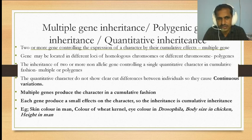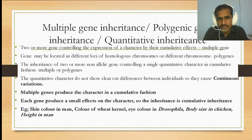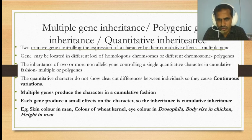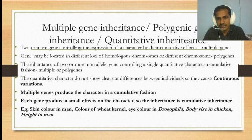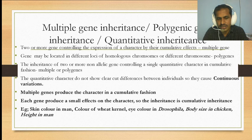Two or more genes controlling the expression of a character by their cumulative effects is called multiple gene. The genes may be located in different loci of homologous chromosomes or different chromosomes, and are called polygenes. The inheritance of two or more non-allelic genes controlling a single quantitative character in cumulative fashion is also called multiple gene or polygene.